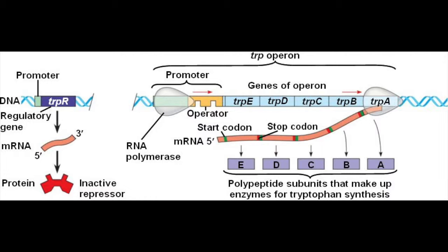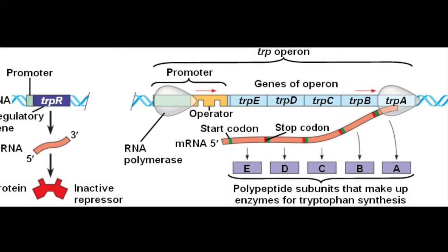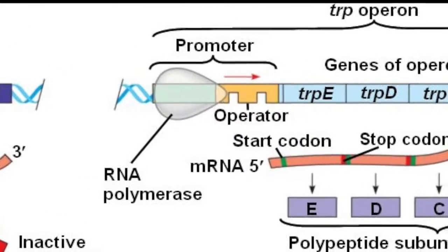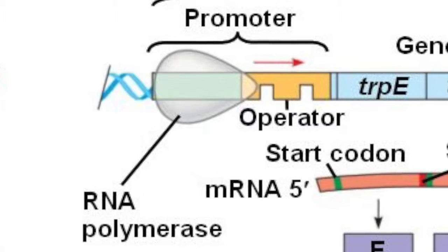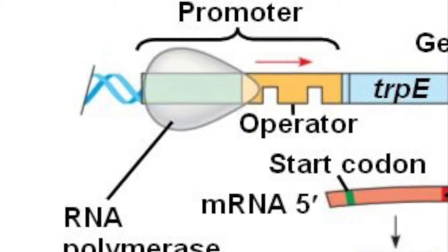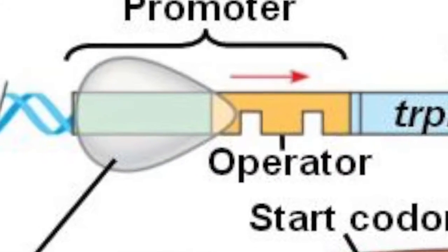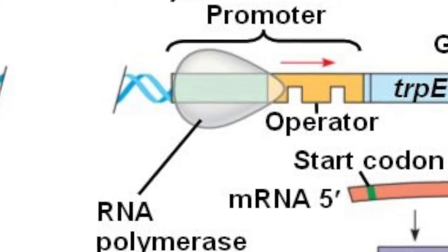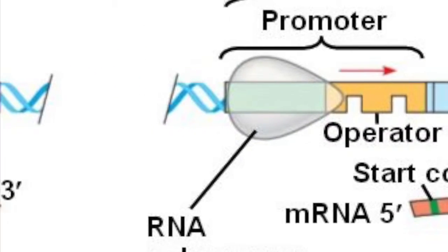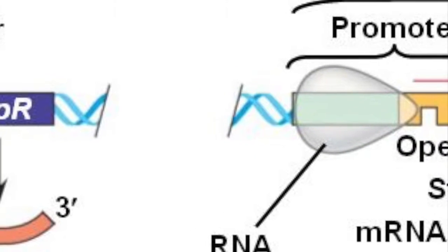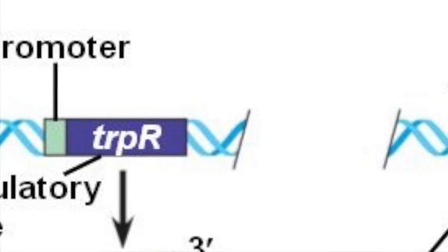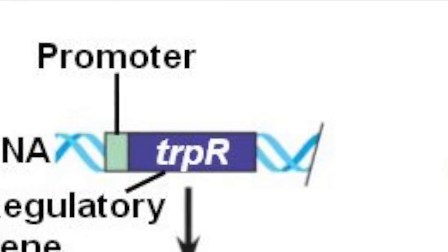Generally, the operon consists of three main components. First, the promoter portion of the operon consists of a nucleotide sequence to which RNA polymerase can attach. Next is an operator, which a repressor can bind to. After the operator is the structural DNA. This means that if a repressor has bound, the structural DNA is inaccessible and therefore cannot be transcribed by the RNA polymerase.